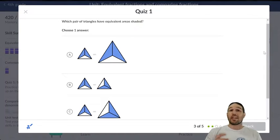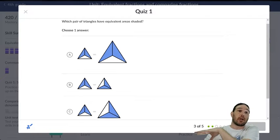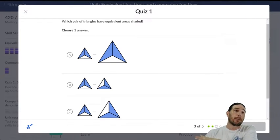Which pair of triangles have equivalent areas shaded? Well, it has to be the second one, because although all of these triangles are cut into thirds, notice how the triangle on the right is a bit bigger than the triangle on the left, which means that each third of the bigger triangle is actually going to be larger than each third of the smaller triangle. This is another important thing.